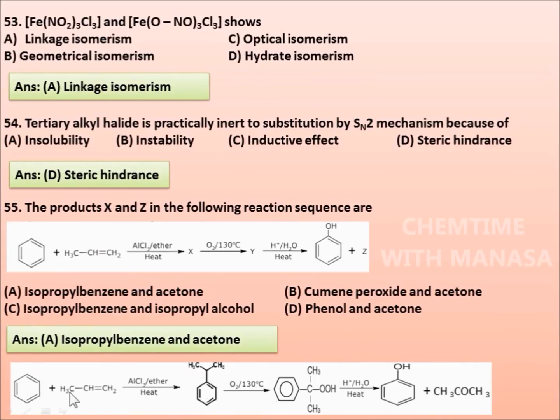Let us consider the actual reaction. Here, benzene reacts with or heated with propene in presence of AlCl3 in ether, we get isopropylbenzene, which is X. Then, isopropylbenzene when oxidized in presence of air gives cumene hydroperoxide. This cumene hydroperoxide is Y, and when it is treated with dilute acid, we get phenol and acetone. So Z is acetone.